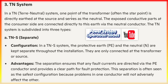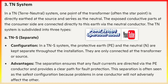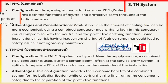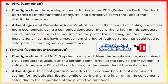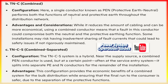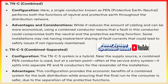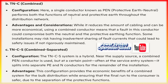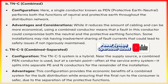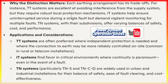TN system: in a TN (terra-neutral) system, one point of the transformer — often the star point — is directly earthed at the source and serves as the neutral. The exposed conductive parts at the consumer side are connected directly to this earth via the neutral conductor. The TN system is subdivided into three types. TNS (separate) configuration: in a TNS system, the protective earth (PE) and the neutral (N) are kept separate throughout the installation, connected only at the transformer or source. This separation ensures that fault currents are directed via the PE conductor and is often seen as the safest configuration.